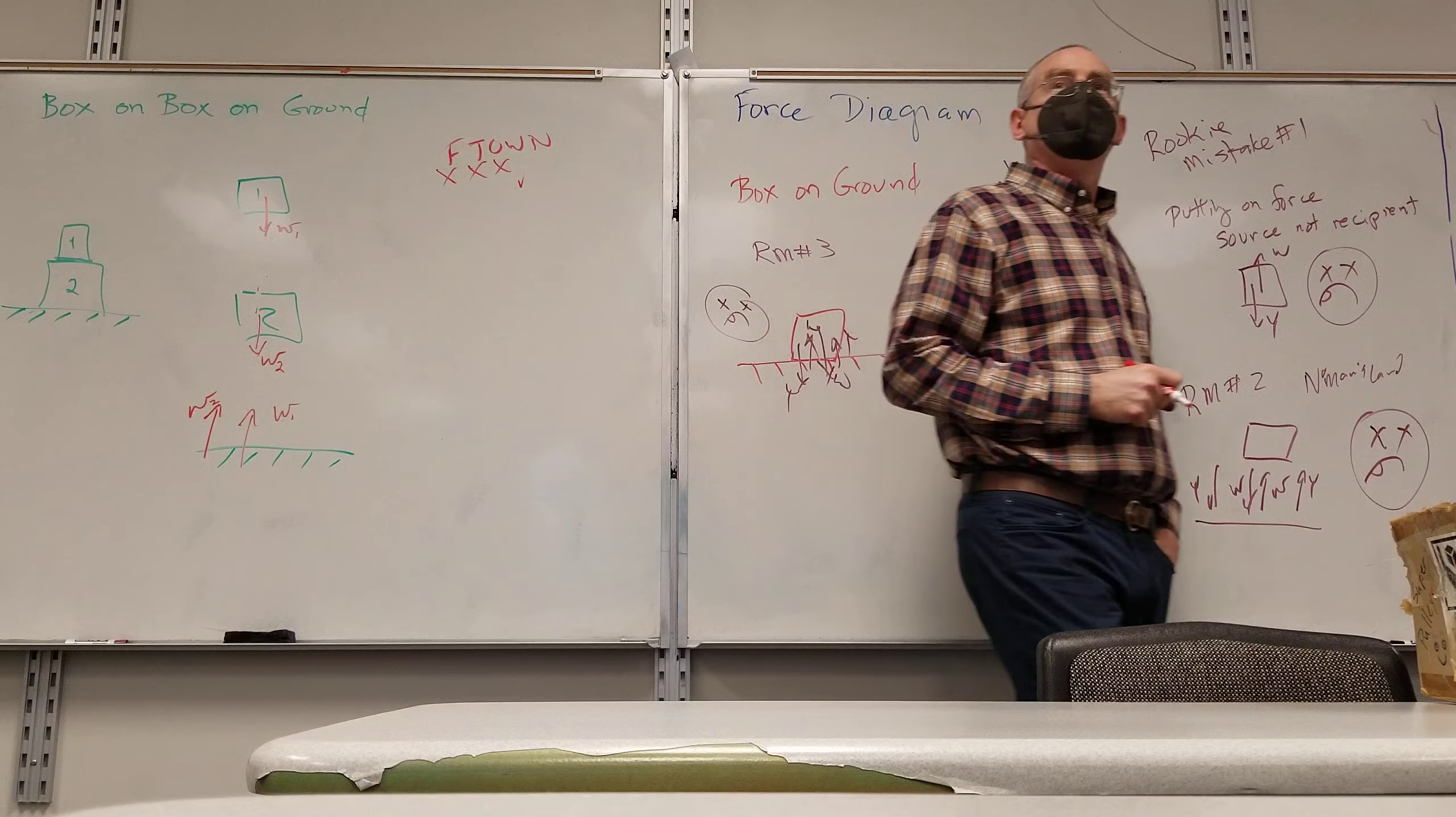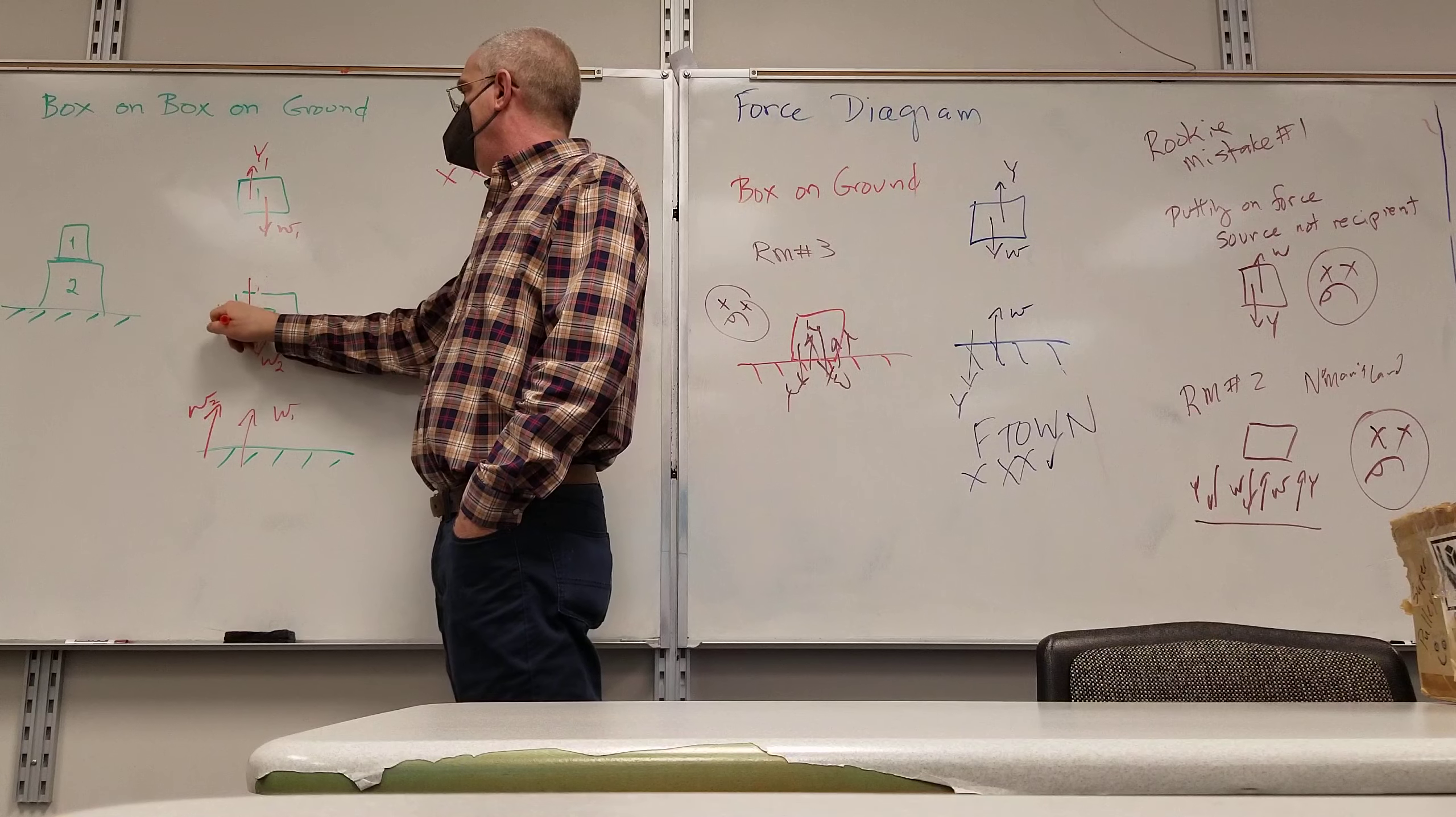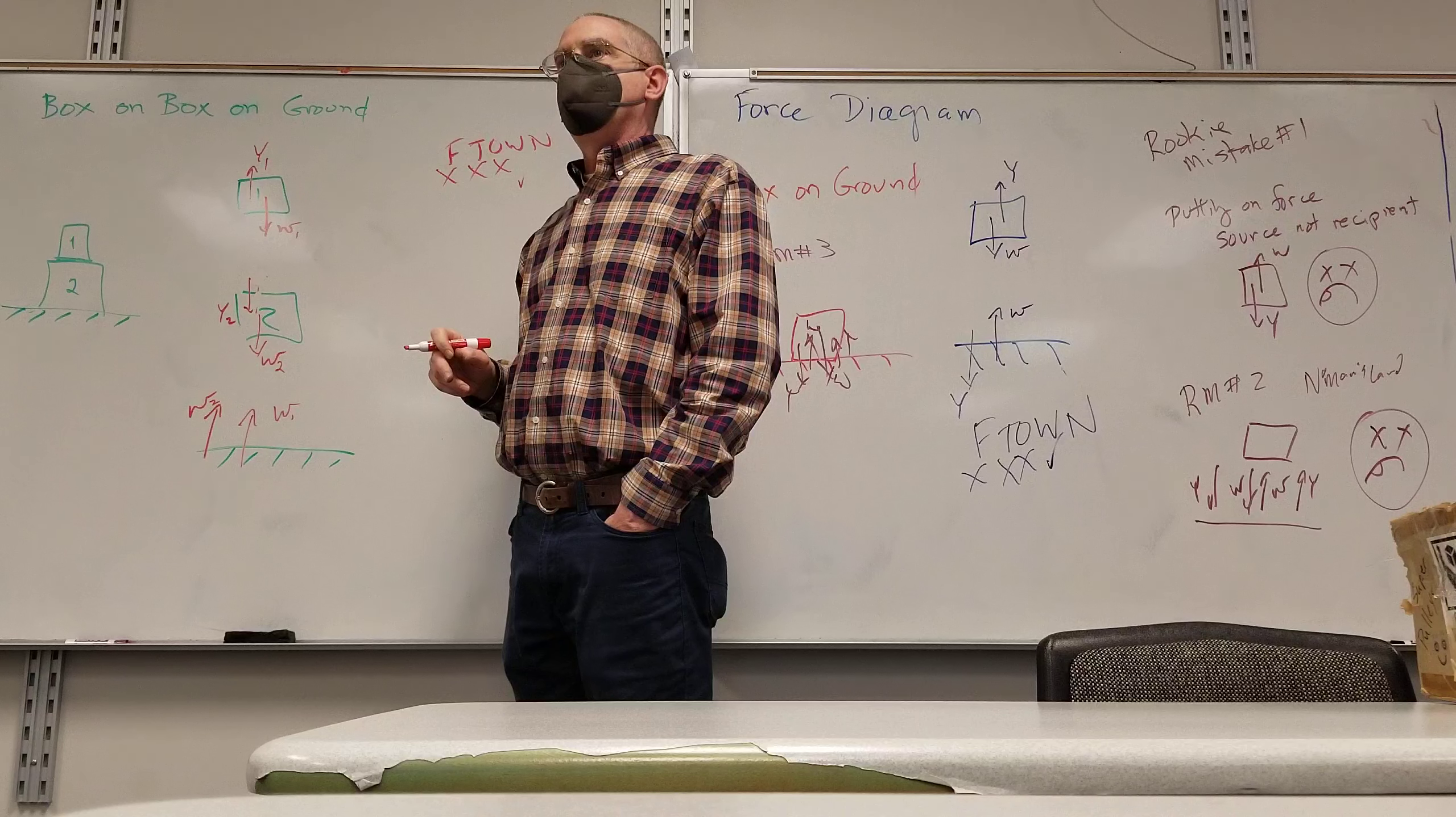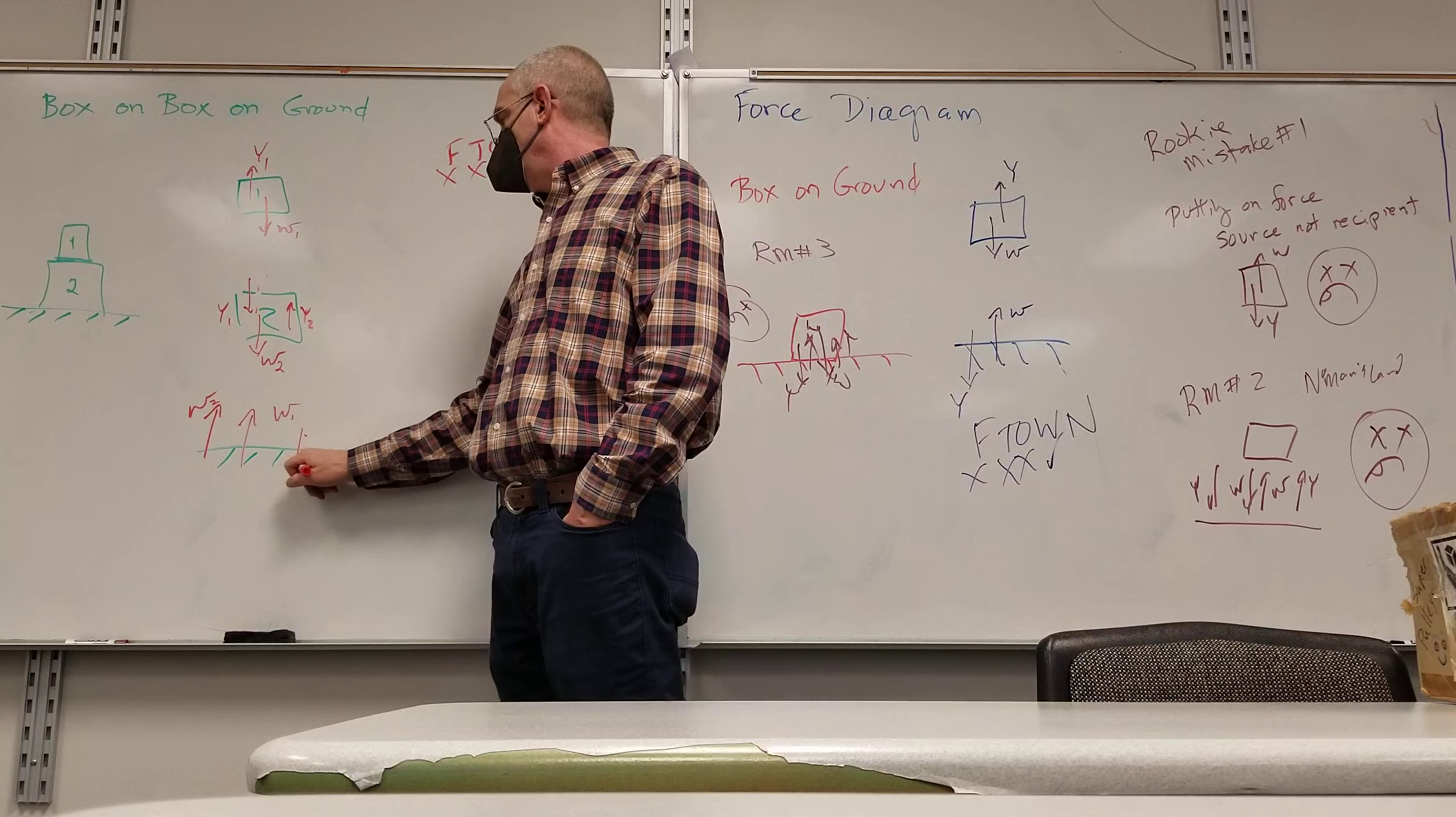Normal force? Which way is it acting on one? Up. And on two? Also up. From what? Because of the ground. So we got this pair here, they're in contact. And we got this pair here. That is mislabeled there. That should be W1. Then W2 there and W2 here.